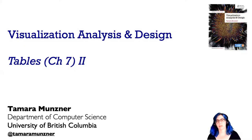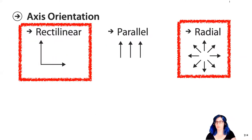Let's continue with visualization analysis and design for arranging tables on a spatial display. In our last segment we talked a lot about rectilinear orientations of the axes, of lists, of matrices. Now let's also talk about radial orientation.